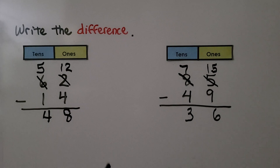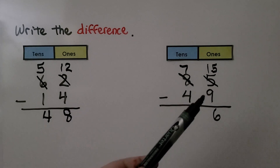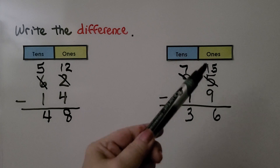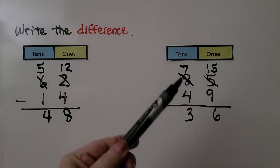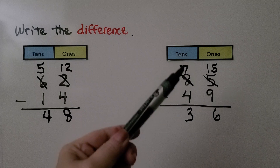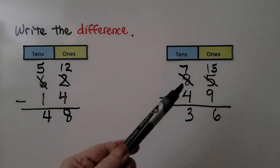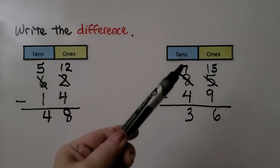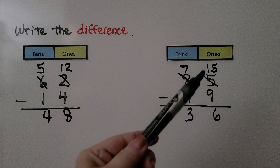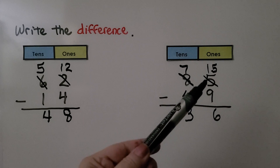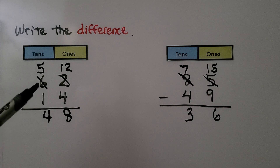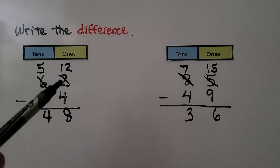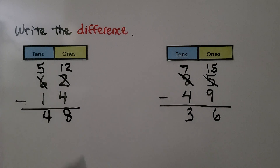If you look at the regrouping, you see in the ones place it's just 10 more. And when you look in the tens place, it's 1 less than what was there. See that? 7 is 1 less than 8, and 15 is 10 more than the 5. Similarly, 5 is 1 less ten than 6, and 12 is 10 more ones than the 2.